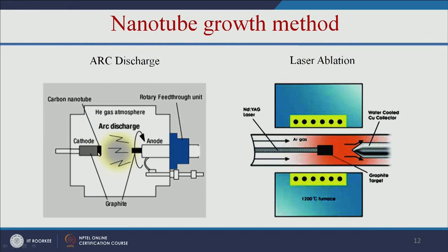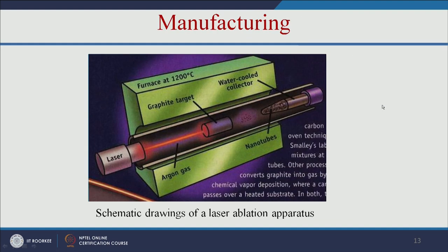In arc discharge, graphite is connected as cathode and anode, power is applied, and carbon nanotubes are deposited on the cathode. In laser ablation, laser light is applied to a graphite target kept in a furnace at 1200°C in the presence of argon gas. The laser vaporizes the graphite target, producing carbon nanotubes that are collected in a water-cooled collector.